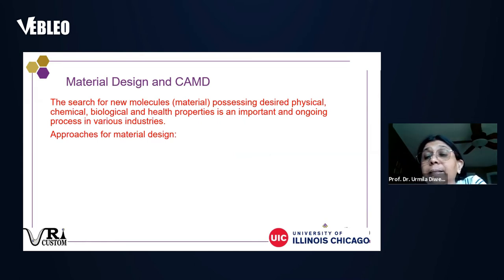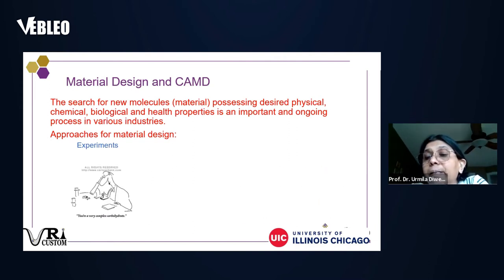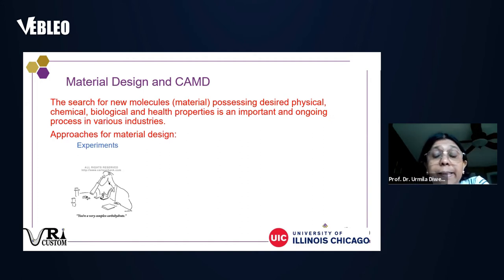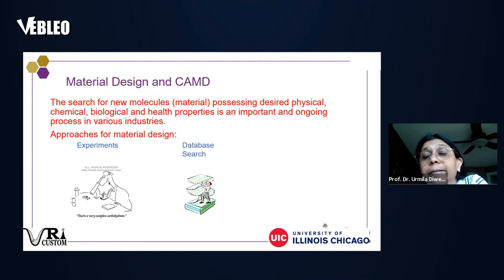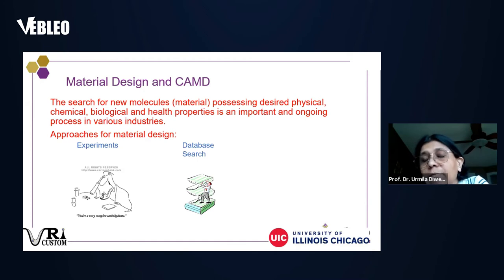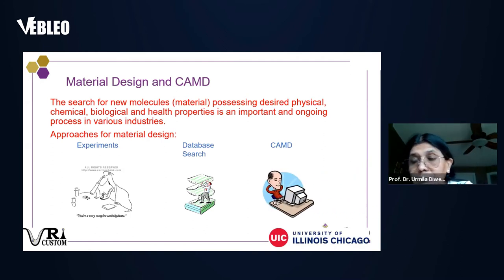The approaches to material design include doing experiments with different chemicals or materials to find the right property, database searches to find the right material — even drug discovery involves this — and the third approach is computer-aided molecular design.